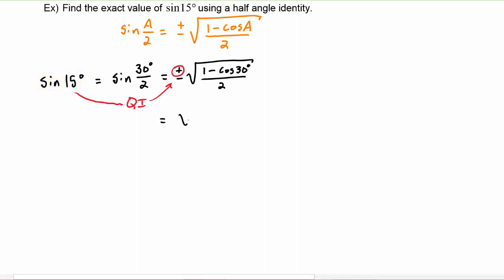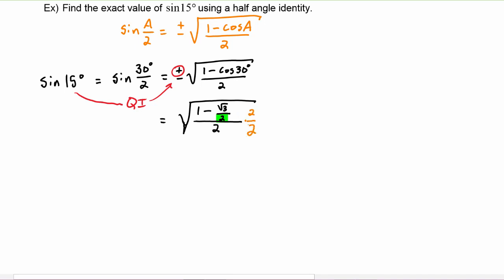Since 15 degrees is in quadrant one, we choose the positive sign because sine is positive in quadrant one. So this will equal the square root of one minus the cosine of 30 degrees, which is radical three over two, and that whole numerator is over two. We'll want to clear that out by multiplying by one in the form of two over two.